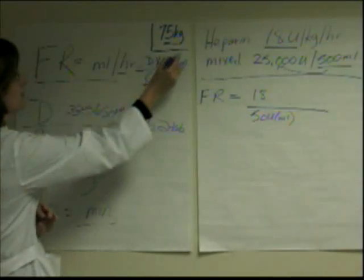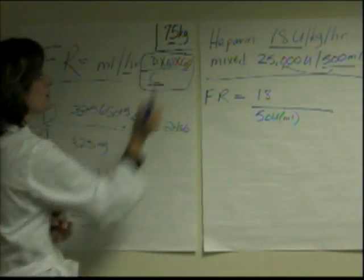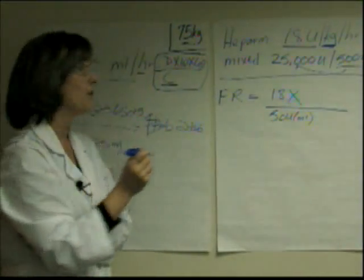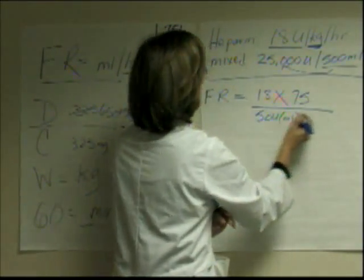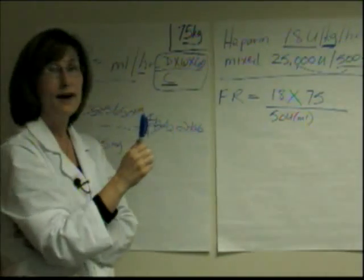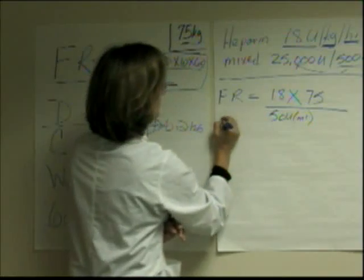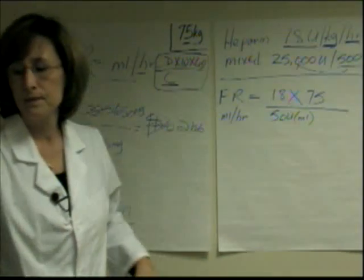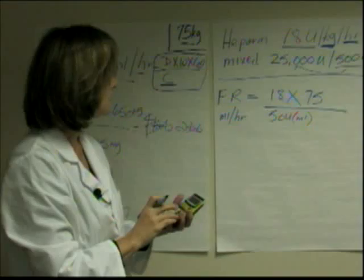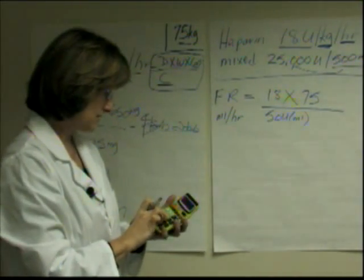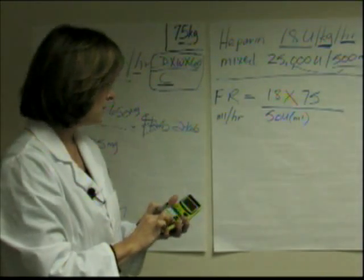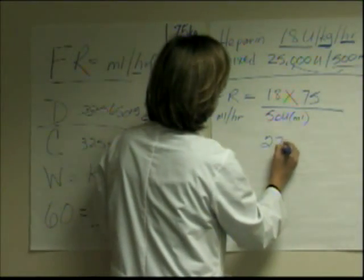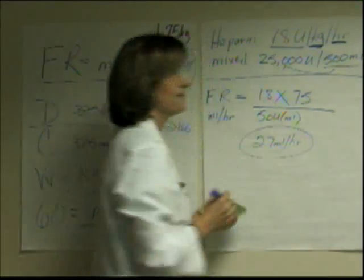Go back to the equation and figure out which other components you need. Do we need the patient's weight? Yes, because it's ordered units per kilogram per hour. So we use 75 kilograms. Do we need that 60 multiplier? No — because it's ordered per hour and our flow rate is in milliliters per hour. So the equation is: 18 units times 75 equals 1350, divided by the concentration of 50 units per milliliter. This tells me to set my IV pump at 27 milliliters per hour.